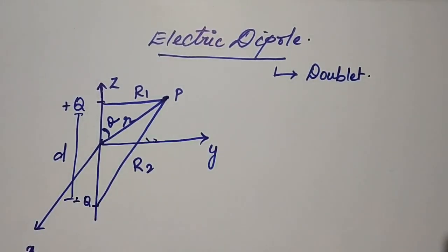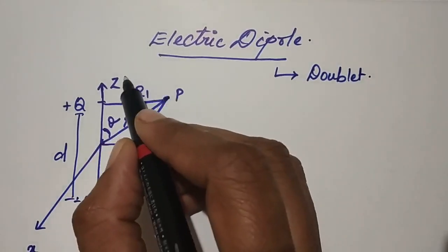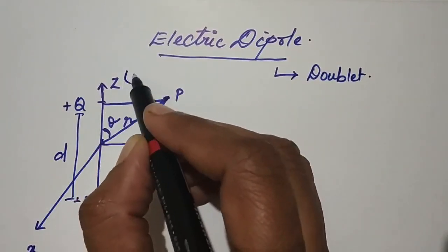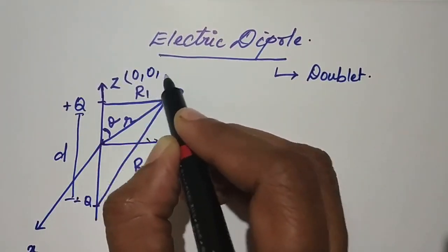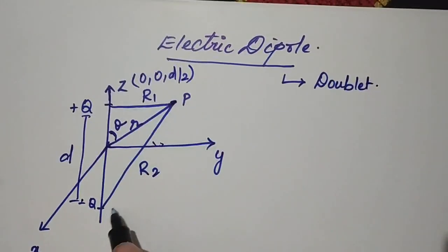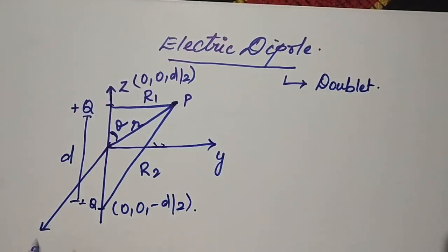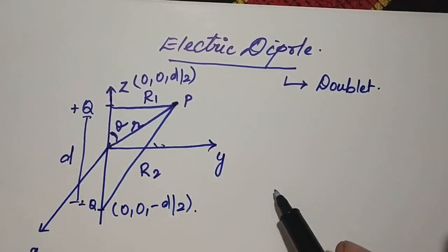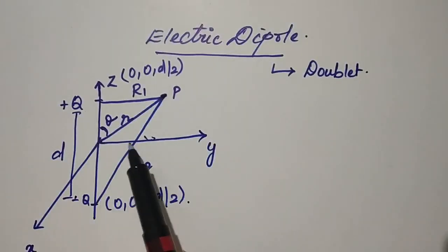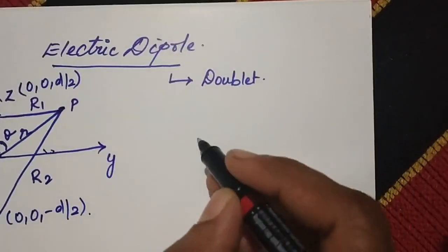Let the positive charge +q and negative charge -q be the two point charges. The coordinate of +q will be (0, 0, d/2) whereas the coordinate of -q will be (0, 0, -d/2). For easy understanding, let us now extend this figure in the same way.